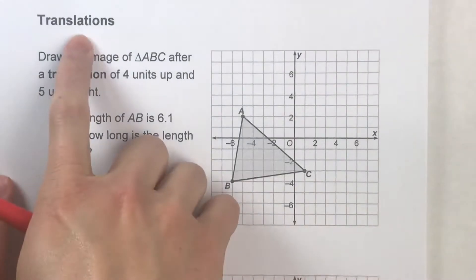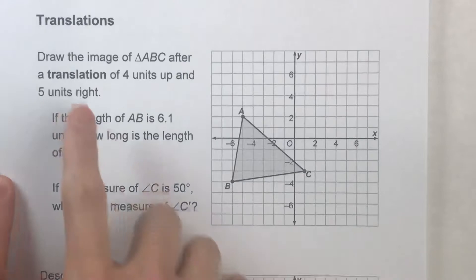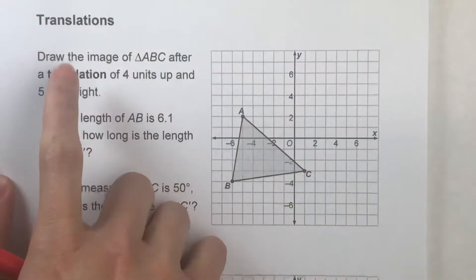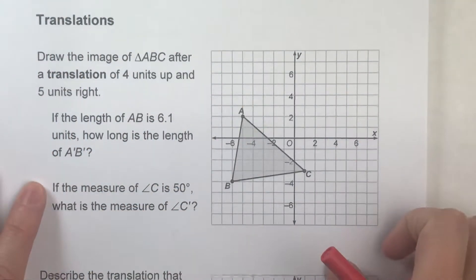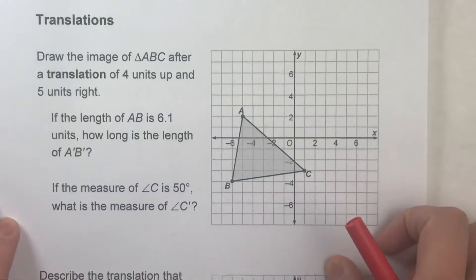So today, we are drawing translations. Now in math, translation is a fancy way of saying slide. So what we're doing is we're taking shapes on a coordinate grid and sliding them.